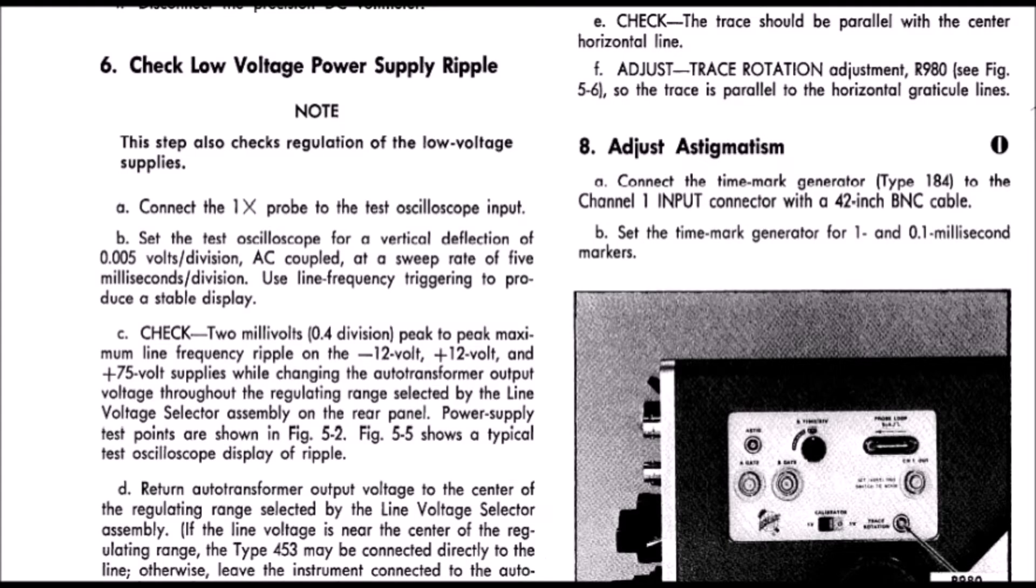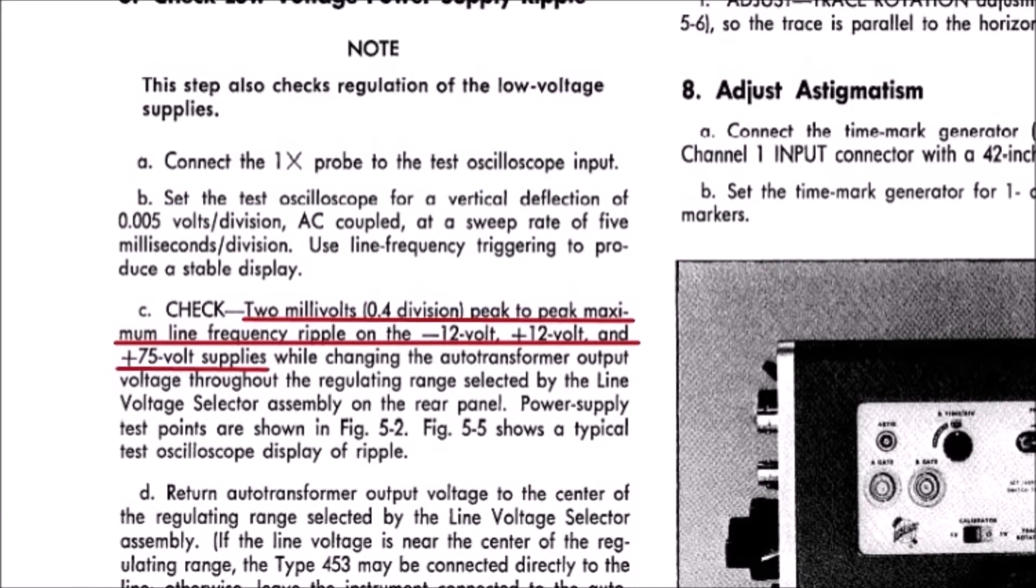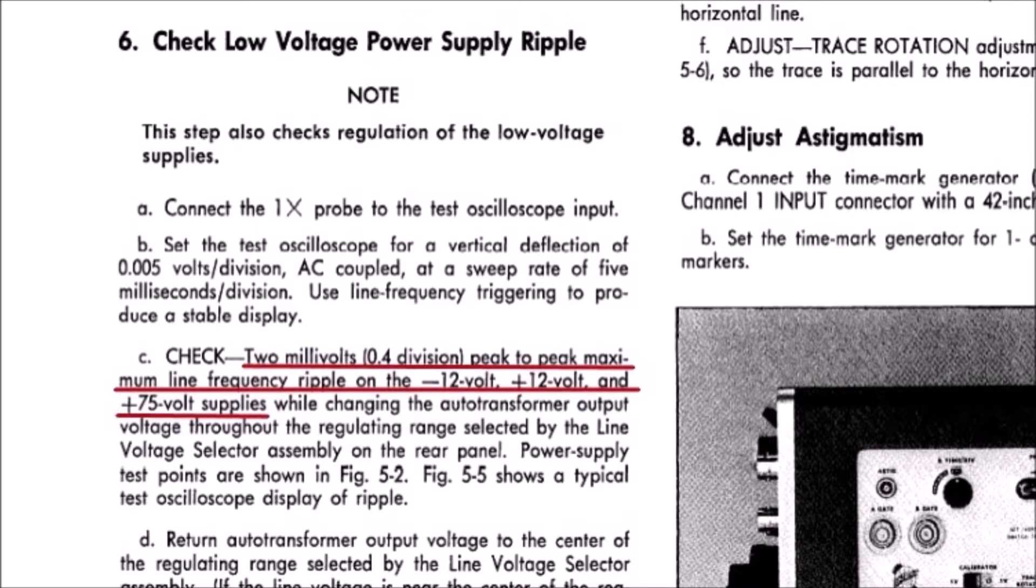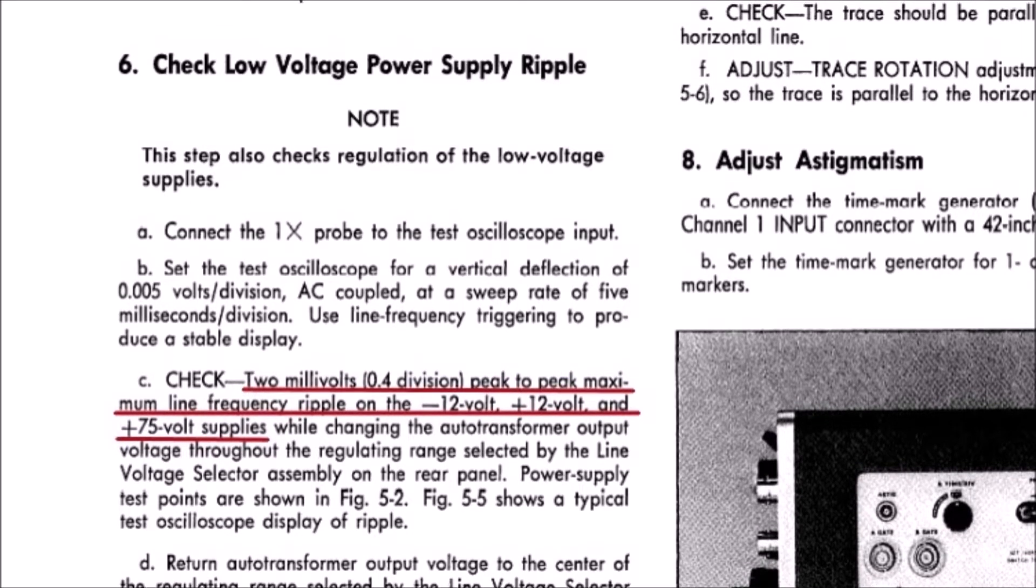Now the manual says maximum power supply ripple is 2 millivolts. I did check the positive and negative 12 volt supplies and found 10 millivolts of ripple. More than the manual says but not really too crazy.